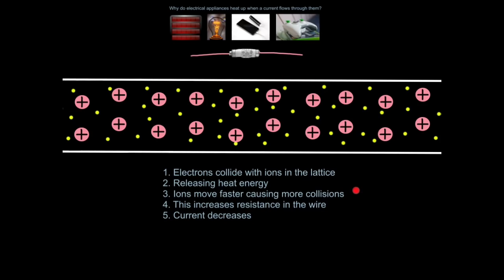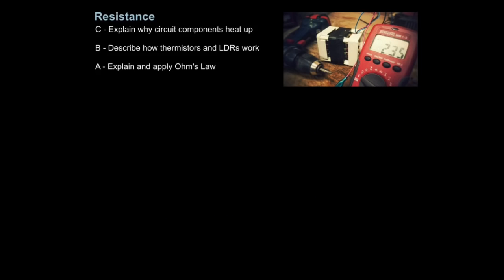This is a very popular topic to test you on an exam, so learn this process. The key idea here is electrons collide with the ions and release heat. This increases resistance, lowering current. So now we can explain why circuit components heat up.